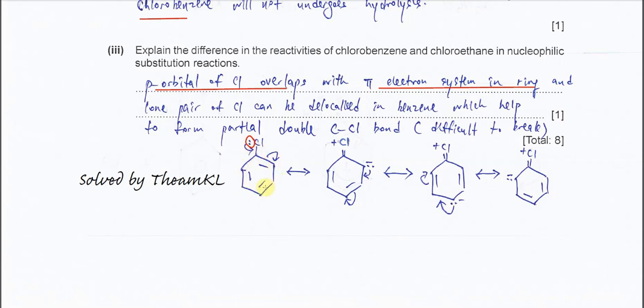Once it starts the delocalization, it will form the C-Cl double bond. So it will form a partial C-Cl double bond, and this actually strengthens the bond. Therefore, it's more difficult to break. When it's more difficult to break, then it's harder to undergo hydrolysis. That's why the chlorobenzene is less likely to react with water or the silver nitrate solution. That's the difference. That's all, thank you.